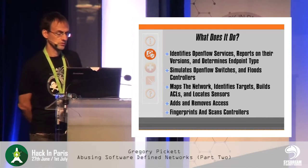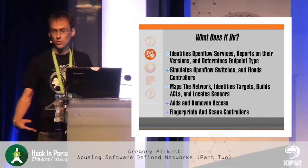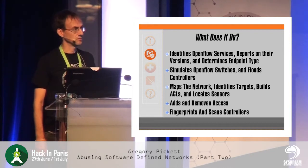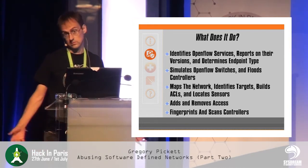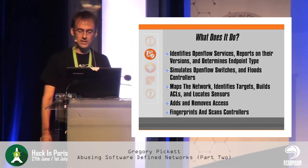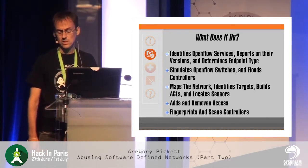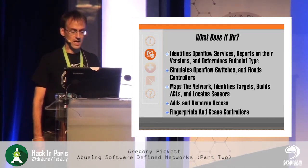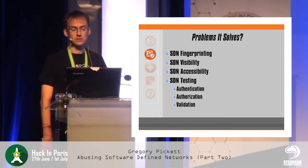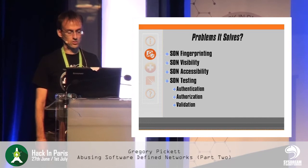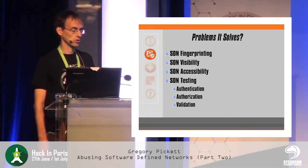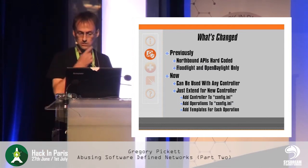What is the SDN toolkit? It discovers, identifies, and manipulates SDN-based networks through both the northbound and southbound APIs. There is of_switch, of_flood, of_check, of_enum, of_map, of_access, and the new one, of_scan. It identifies OpenFlow services, reports on their versions, and determines endpoints — that is of_check and of_enum. It simulates OpenFlow switches and floods controllers — that is of_switch and of_flood. It maps the network, identifies targets, builds ACLs, and locates sensors — that would be of_map. Adds and removes access — that is of_access. And with of_scan we are now able to fingerprint and scan controllers. Problems it solves: SDN fingerprinting, SDN visibility, SDN accessibility, SDN testing, authentication, authorization, and validation.